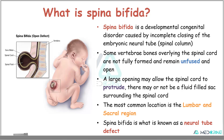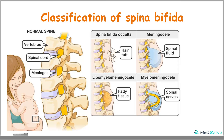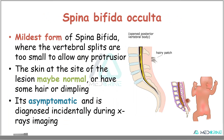The most common location for development of Spina Bifida is usually the lumbar region and the sacral region. Spina Bifida can be classified into four types: Spina Bifida occulta, Meningocele, Lipomyelomeningocele, and Myelomeningocele.